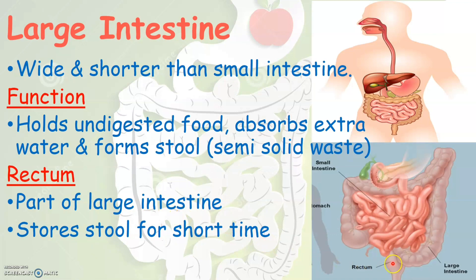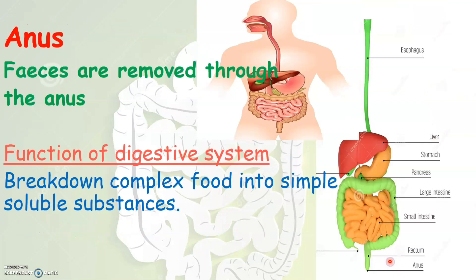As you see here, this part of the large intestine helps in storing the stool for a shorter period of time and it is called as the rectum. The semi-solid waste is stored for a shorter period of time by the rectum. This waste matter, otherwise called as feces, is removed from our body through the organ called the anus. Just below the rectum is the organ anus, which helps in removing the waste matter from our body.